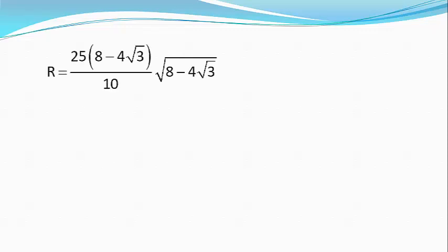Or r equals 25(8 minus 4 root 3) whole divided by 10 into root of 8 minus 4 root 3 which on simplification gives me r equals 2.77 meters which is approximately equal to 2.8 meters.